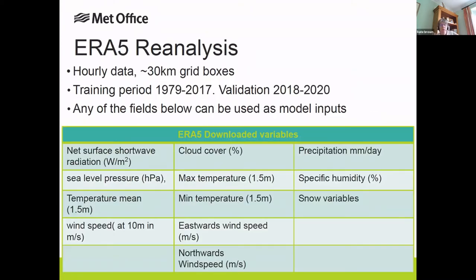The ERA5 reanalysis hourly data is on a 30-kilometer grid. We were going to use the training period from 1979 to 2017, and then use data from 2018 to 2020 as our validation, and below is the list of fields that we had from the ERA data which we thought would be useful for us.